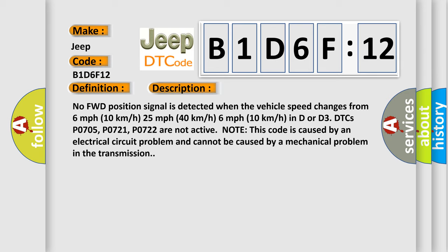No forward position signal is detected when the vehicle speed changes from 6 mph (10 km/h) to 25 mph (40 km/h) to 6 mph (10 km/h) in D or D3. DTCs P0705, P0721, P0722 are not active. Note this code is caused by an electrical circuit problem and cannot be caused by a mechanical problem in the transmission.